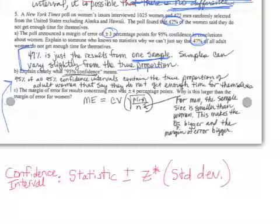95% of all 95% confidence intervals contain the true parameter of interest. And the parameter of interest is, in this case, the proportion of adult women that say they do not get enough time for themselves. So, that's the parameter that we are interested in estimating.